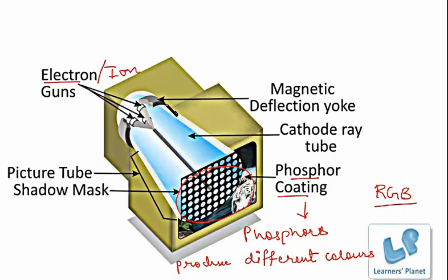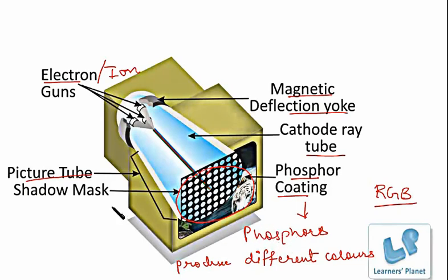This cathode ray tube is held by a magnetic deflection yoke. It is a specialized vacuum tube on which images are produced when an electron beam from the electron guns strikes the phosphorescent surface — that is the phosphor coating. This is the picture tube which is similar in both computer displays and the television receiver. Here is the shadow mask, which is present behind the phosphor coating where the phosphor dots are produced. This is an overview of a CRT.